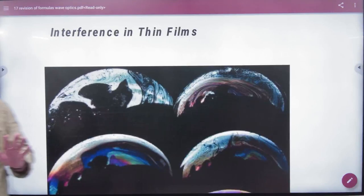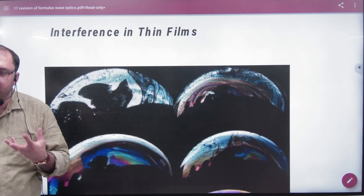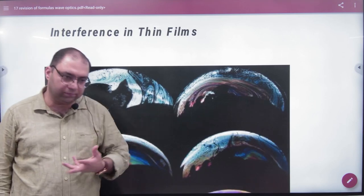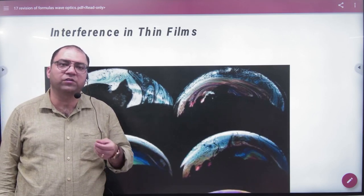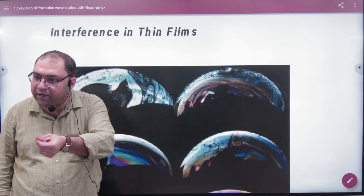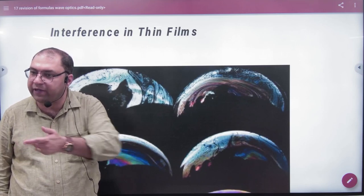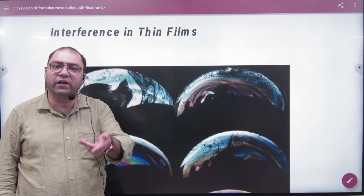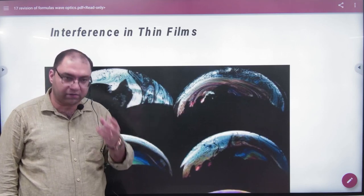So what happens in interference in thin films? Suppose you have a soap bubble, a bubble or kerosene on the water. So it looks like a diesel pattern.